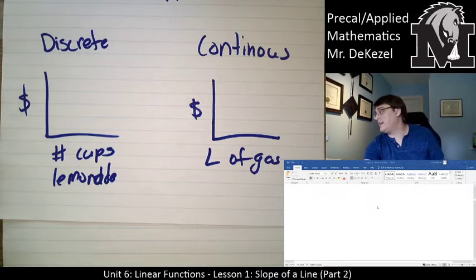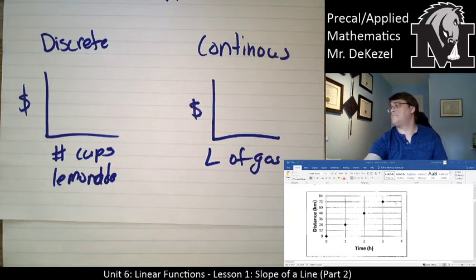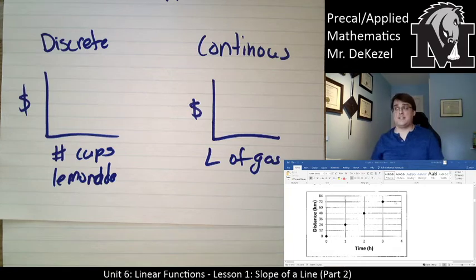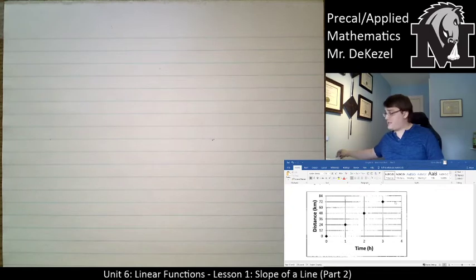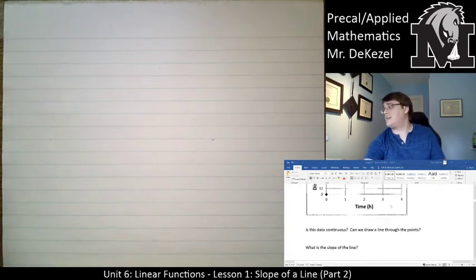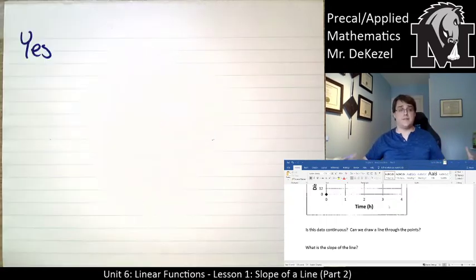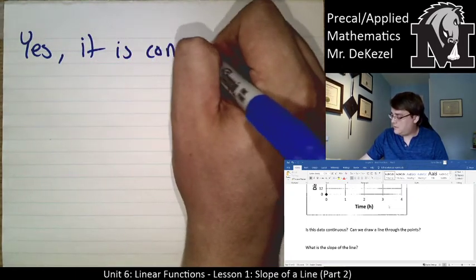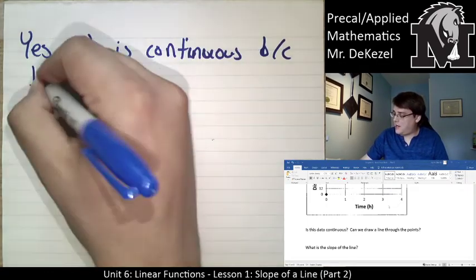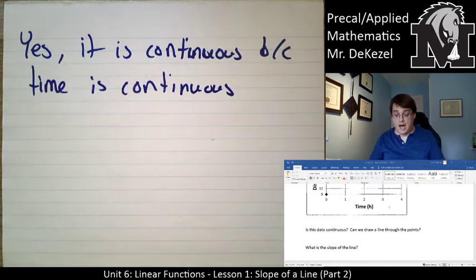So let's go to Hannah's bicycle trip on the next page. This graph represents Hannah's bicycle trip. So we have the time in hours, 1, 2, 3, and we have the distance in kilometers that Hannah has traveled. The first question wants to know, is this data continuous? Can we draw a line through it? Yes, this data is continuous because time is continuous. Each fraction of time has meaning. So we can draw a line there.